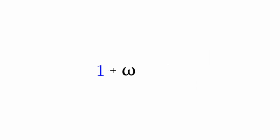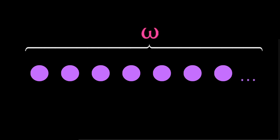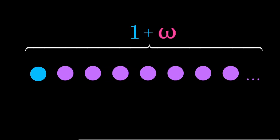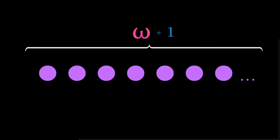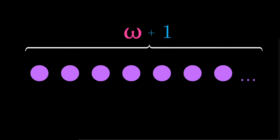One plus omega is not the same as omega plus 1. Let me show you why. Let's say we have an infinite number of balls — this is omega. When we do 1 plus omega, we're just adding one ball to the infinite number of balls, so that doesn't make it different from infinity. But when we do omega plus 1, we're adding one ball after an infinite number of balls.